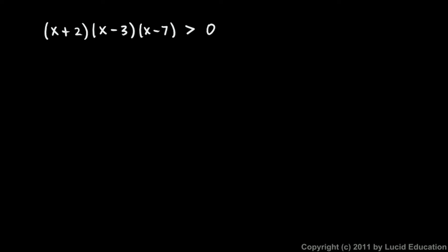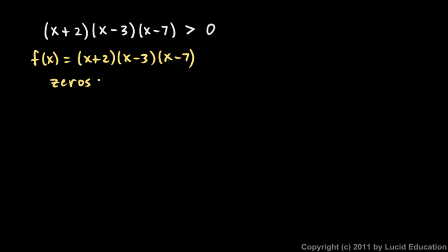First, the standard approach. The zeros — if we think of this polynomial as a function f(x) equal to (x + 2)(x − 3)(x − 7) — we can find the zeros pretty easily since it's already in factored form. The zeros are at negative 2, positive 3, and positive 7.